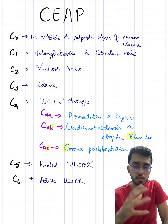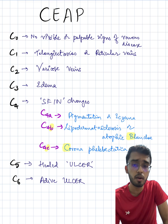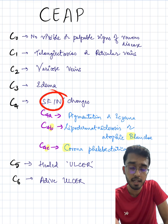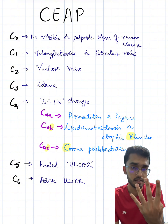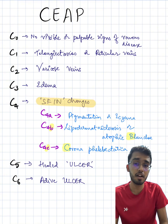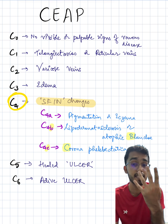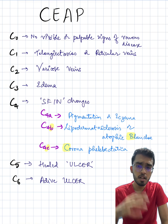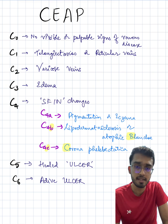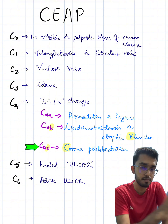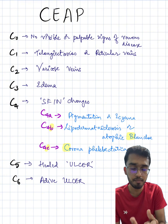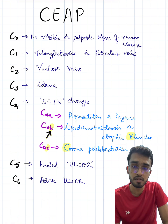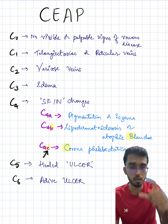Moving on to Class 4 of CEAP. You would have studied that varicose veins also have a lot of skin changes. How many letters does the word 'skin' have? S-K-I-N — four letters. So the skin changes of chronic venous disease come under Class 4 of CEAP. This class can be divided into subclasses: C4A, C4B, and C4C. Under C4A, we have pigmentation or eczema. Under C4B, we have lipodermatosclerosis and atrophie blanche. And under C4C, we have corona phlebectatica.